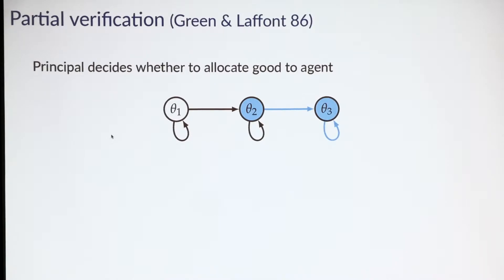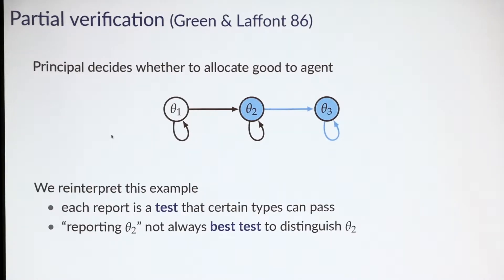This was a famous example that concerned economists familiar with the revelation principle. Today we'd like to reinterpret the example and view it not as a failure of the revelation principle, but as a property of testing. We think of each report as a statistical test that only certain types can pass. Reporting theta 2 is not the best test to distinguish theta 2 from all other types.